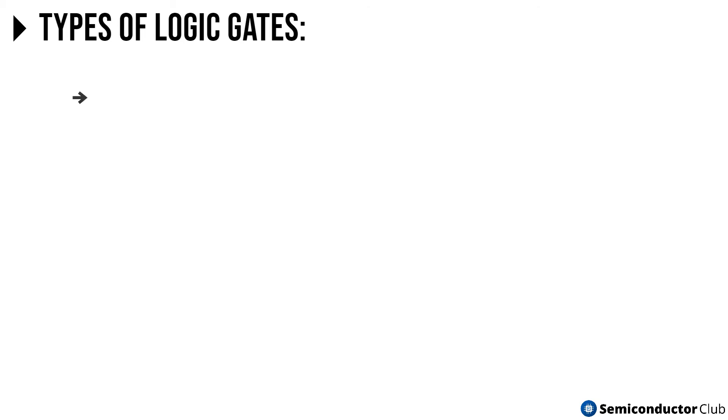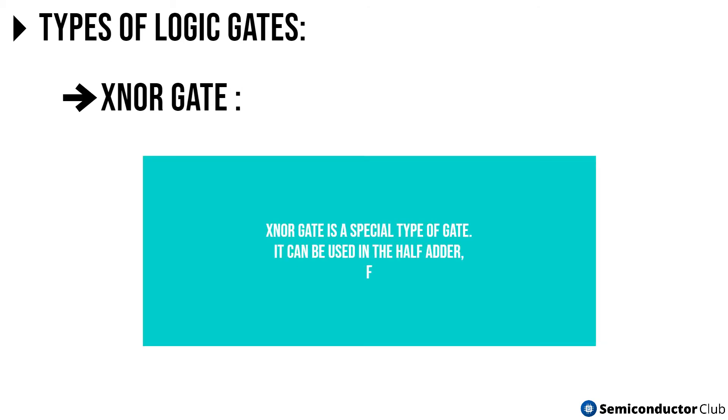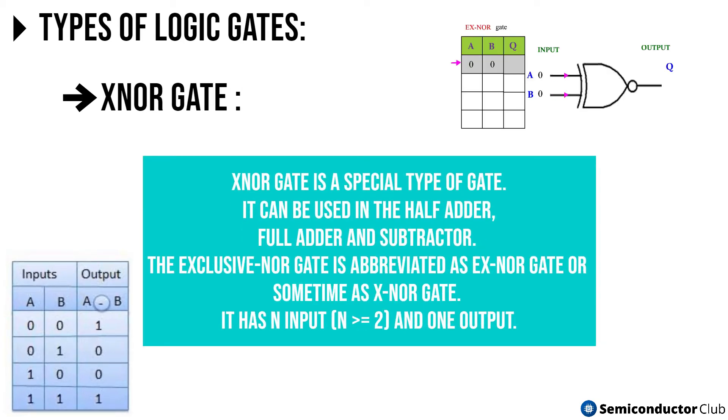And lastly, we have the XNOR gate. XNOR gate is a special type of gate. It can be used in the half adder, full adder and subtractor. The exclusive NOR gate is abbreviated as EX-NOR gate or sometime as X-NOR gate. It has N input, N greater than equals 2, and one output.